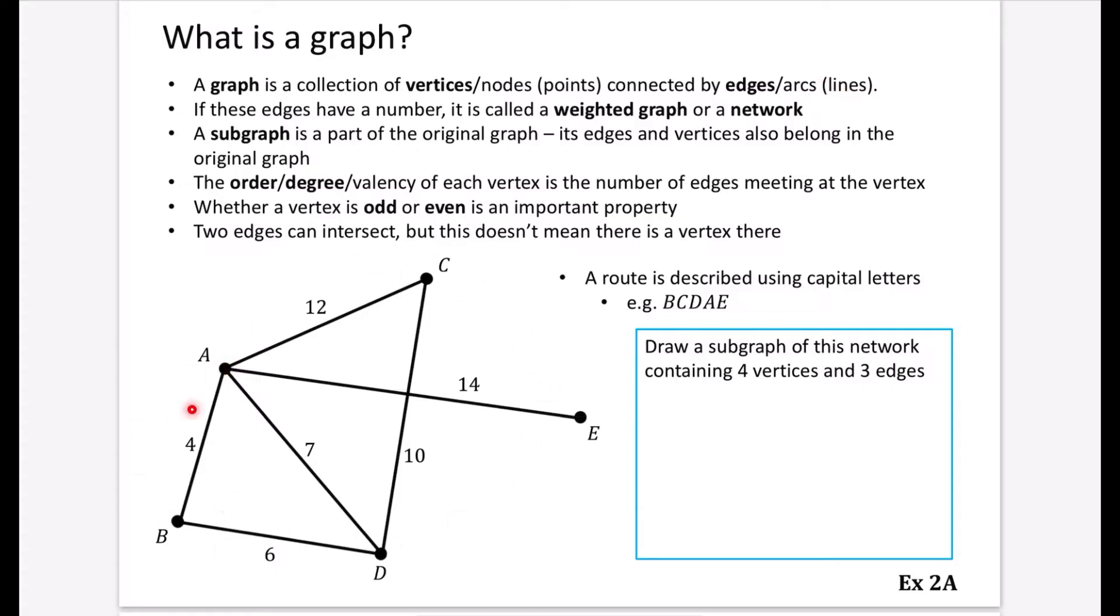So you can see that this example of a graph that I've got down here, the vertices are the ones with capital letters A, B, C, D, E, and the edges are the lines that are connecting them together.